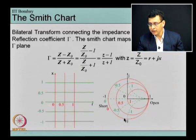Outside this biggest circle, by biggest circle I mean the circle having radius 1, the real part of the impedances will be negative and that corresponds to active devices.